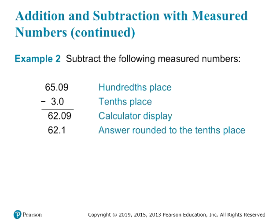Let's say we're doing a subtraction problem: 65.09 minus 3.0. Our first value ends in the hundredths place and our second value ends in the tenths place. We can draw a line and cut off the digits past the tenths place. Initially we get 62.09, and we're going to chop off the 9 — but because it's greater than 5, we round up the 0 to 1. So we end up with 62.1 as our final answer.